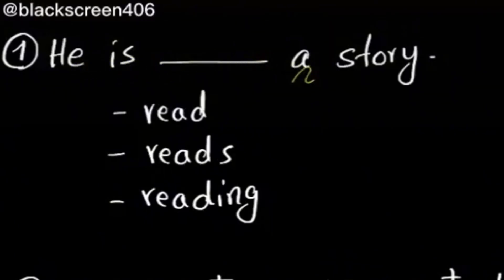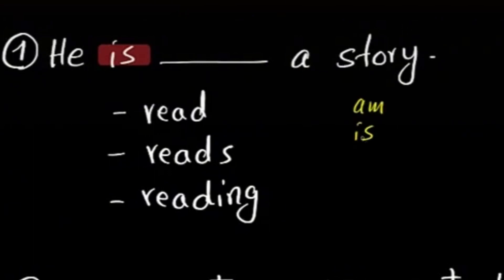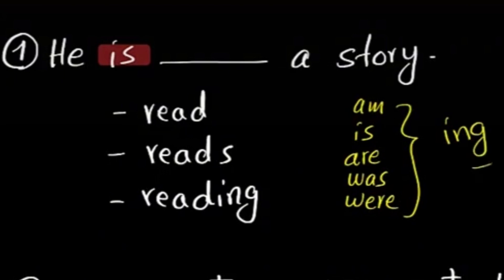He is blank a story: read, reads, reading. The key in this question is the word 'is'. Listen guys, 'is' or 'was' or 'were' are always followed by '-ing' unless we're talking about the passive voice. So which was here? Reading.